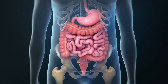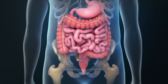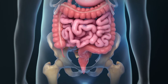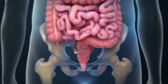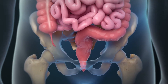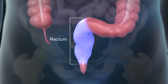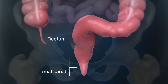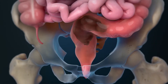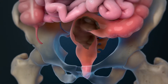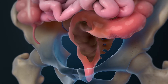An open total mesorectal excision, or TME, is a surgical procedure to remove your rectum and some of the tissue around it. Your rectum is the last part of your large intestine before the anal canal. The rectum stores solid waste, called feces, until you pass it out of your body.